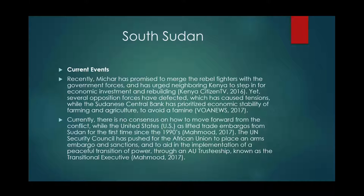Some current events: Machar, formerly the vice president of South Sudan and now leader of the opposition forces, had promised to merge the rebel fighters with the government forces and urged neighboring Kenya to step in for economic investment and rebuilding. Yet several opposition forces have defected, raising tensions, while the Sudanese central bank has prioritized economic stability through farming and agriculture to avoid a famine. Currently there is no consensus on how to move forward. While the U.S. lifted trade embargoes from Sudan for the first time since the 90s, the UN Security Council has pushed for the AU to place an arms embargo and sanctions against the South Sudanese government and to aid in the implementation of a peaceful transition of power through an African Union trusteeship known as the Transitional Executive.